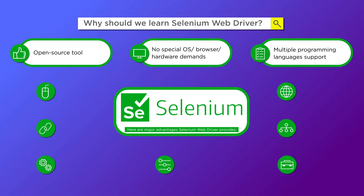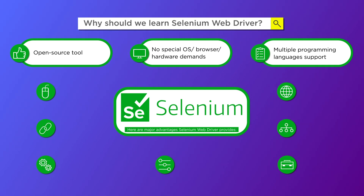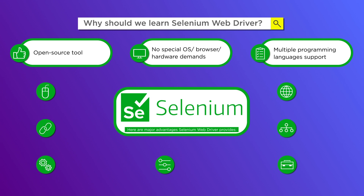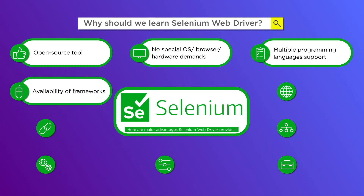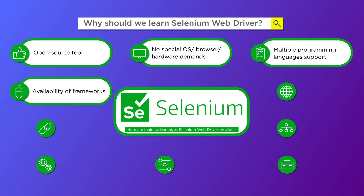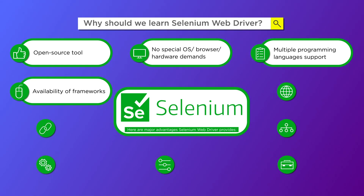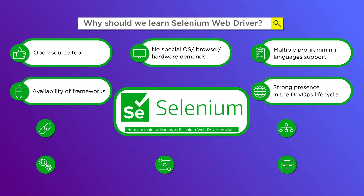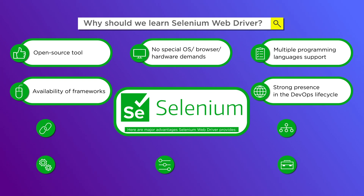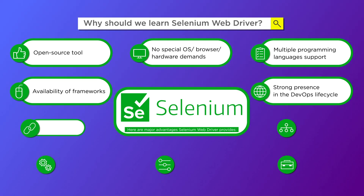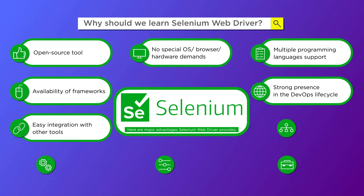Another benefit is multiple programming languages support. This is the single most important factor for any programmer getting into the automated testing domain. Most tools in the market require you to specialize in one particular language, such as Java or C#. Frameworks are another advantage — they are very similar to templates. You can make slight modifications to your core test per requirement for different conditions instead of making wholesale changes. Selenium also has a strong presence in the DevOps lifecycle, as most companies are now replacing agile or waterfall approaches with the DevOps approach. Additionally, Selenium can be easily integrated with open source tools such as Jenkins, TestNG, and Maven.